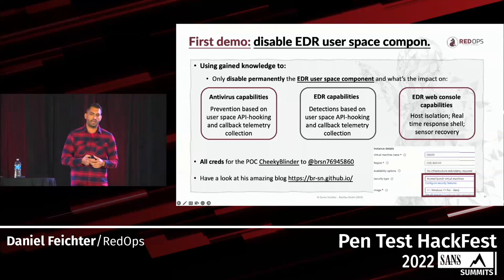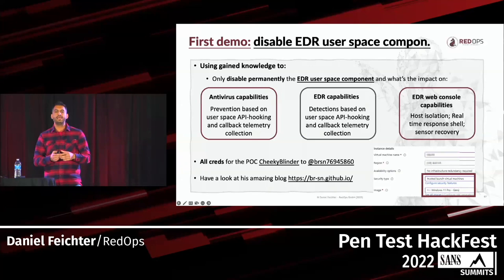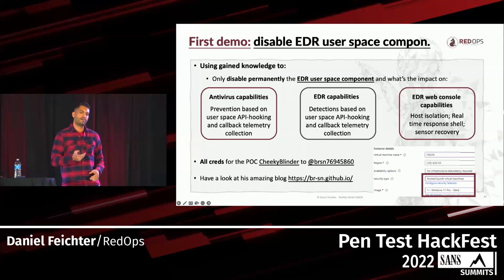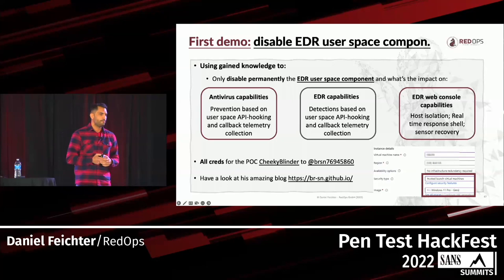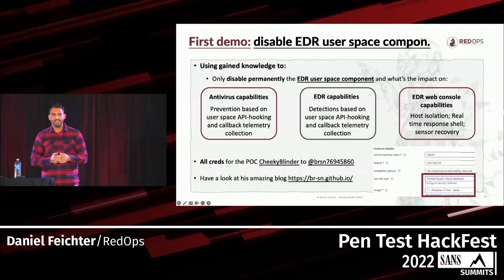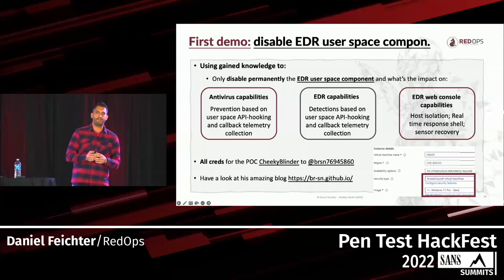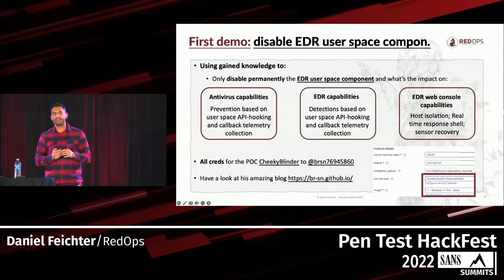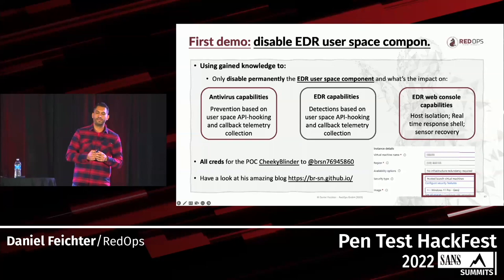In our first demonstration, our goal is to permanently disable the initialization of the EDR userspace component and check the impact on our predefined goals — permanently getting rid of antivirus and EDR capabilities. In the demo I use a tool called CheakyBlinder, available on GitHub. An important notice: the POC we execute is called PuTTY because I cloned the metadata attributes from the original PuTTY.exe. As Sean mentioned in his talk yesterday, this often makes the file appear more legitimate and can sometimes help bypass static and dynamic analysis from the antivirus module.